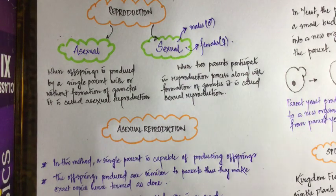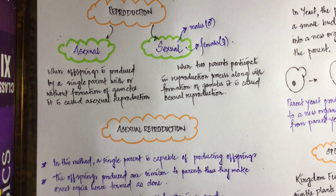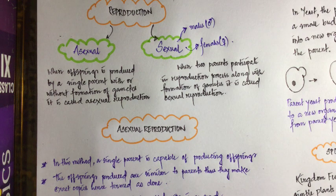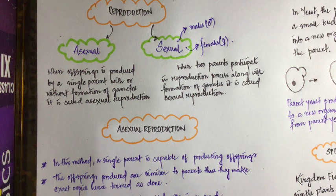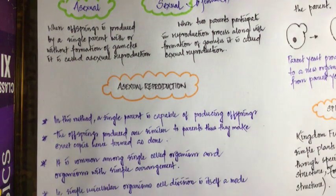In sexual reproduction, two parents are involved — one male and one female. The male gamete and the female gamete fuse with each other to produce a new organism. How they fuse, what is the process of gamete formation — we will discuss all of that. For now we are building our basic concepts.